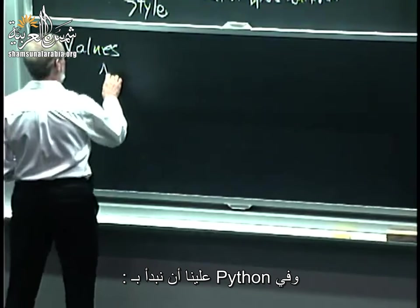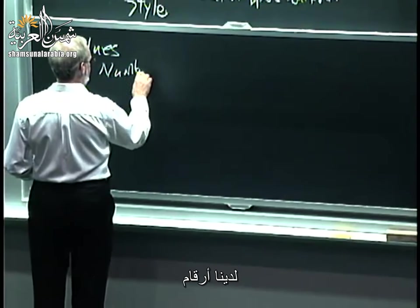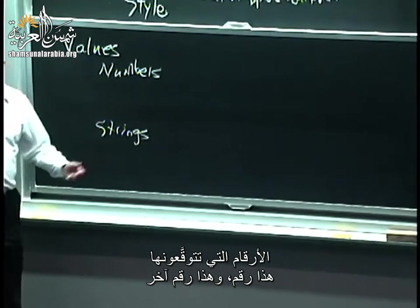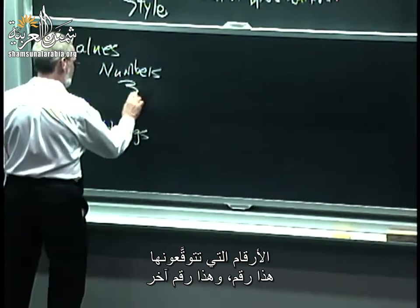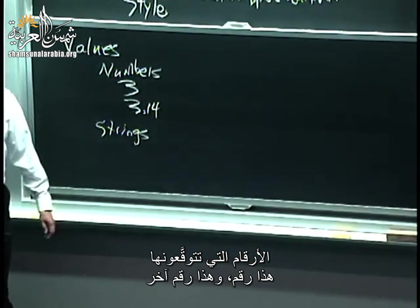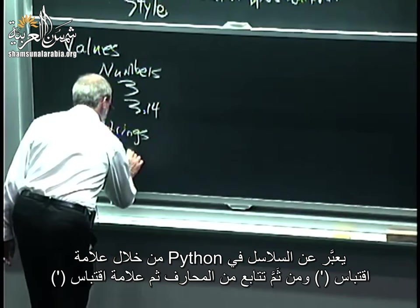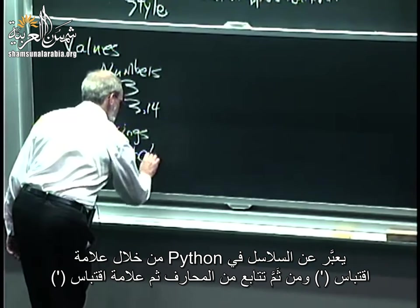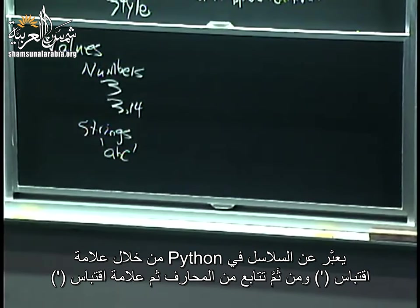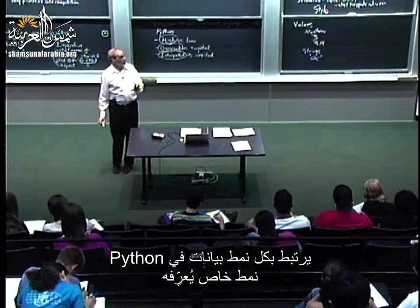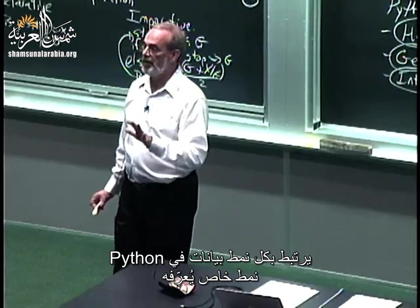Associated with every data type in Python is a type which identifies the kind of thing it is. Strings are just a type on their own. For numbers, we can have a variety of types: something like 3 would be an integer or int; something like 3.14 would be a floating point or float — think of it as a real number. Associated with each type is a set of operators that expect certain types of input in order to do their job.